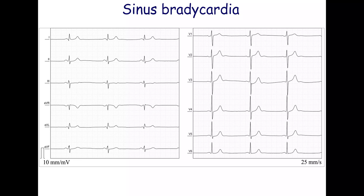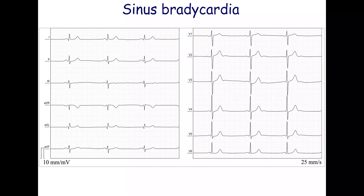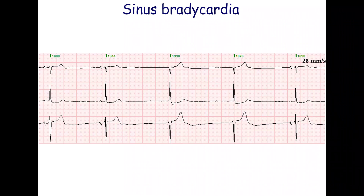Drug-induced bradycardia is sometimes observed. The heart rate on this ECG is 41 beats per minute. Junctional escape complexes may appear during severe sinus bradycardia. This ECG shows bradycardia with junctional escape complexes.